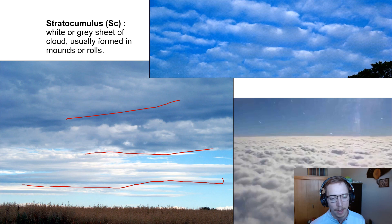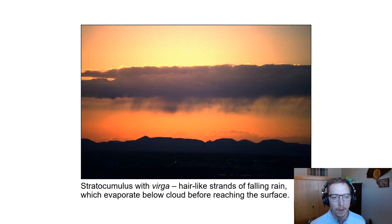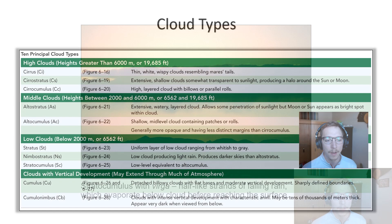Here's another example of stratocumulus, and that image is from above the clouds, showing the cloud base from above. We can also see stratocumulus with a phenomenon called virga — hair-like strands of falling rain evaporating below the cloud before reaching the surface. We'll talk about virga briefly in our precipitation lecture next.